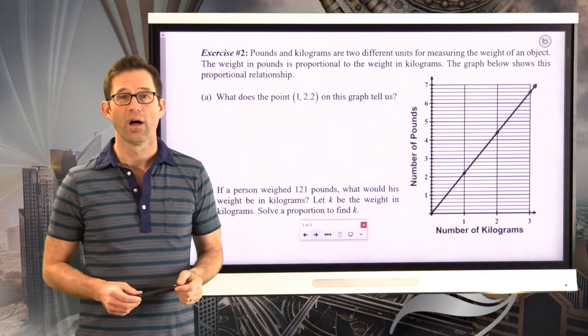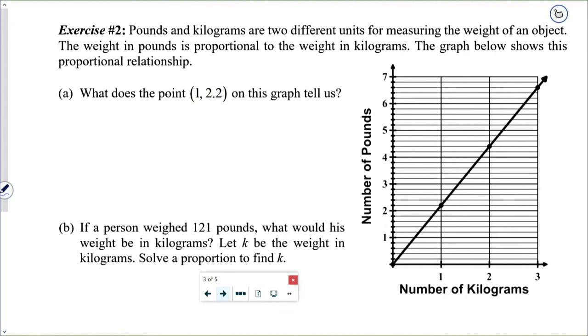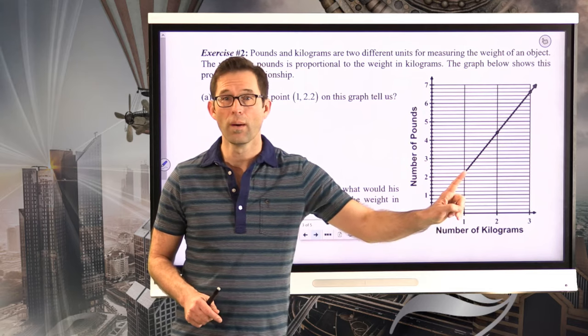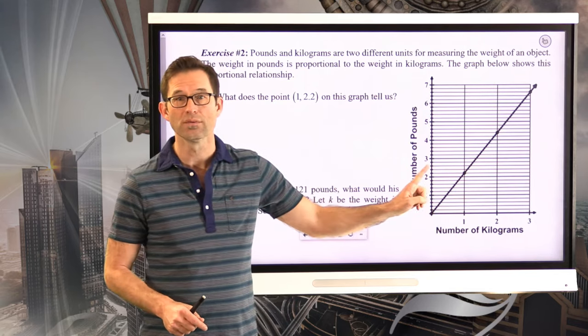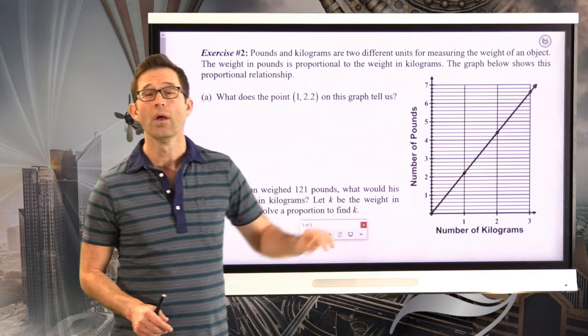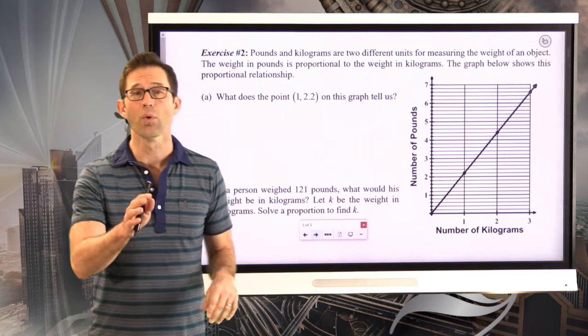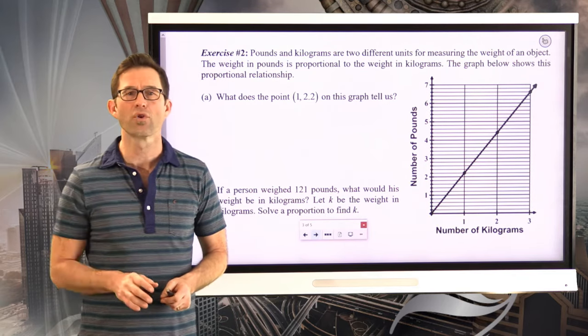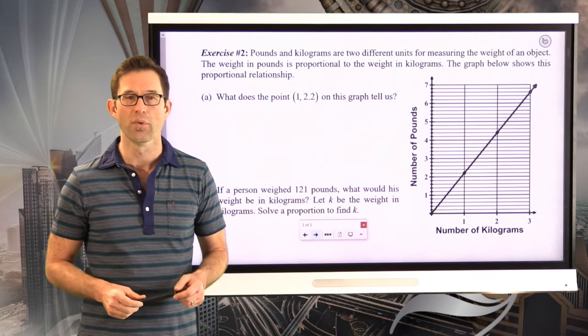Letter A asks us the following: What does the point 1 comma 2.2 on this graph tell us? So you can literally go over to 1, go up, and we're at 2.2. A little bit hard to tell that from right here, but that point lies in the graph. So pause the video now and explain how you would interpret the point 1 comma 2.2.